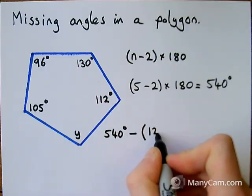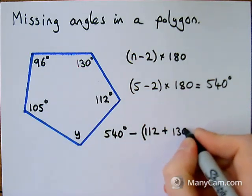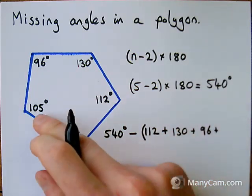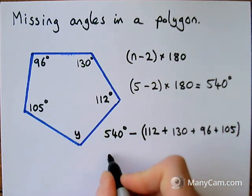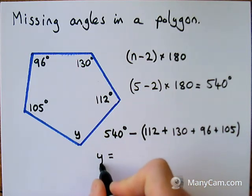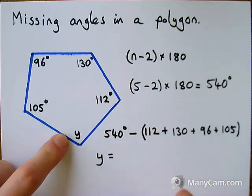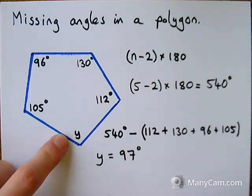So I'm going to take away 112, and I'm going to take away 130, and then 96, and then 105. And then when I work that out, that's going to tell me what my missing angle y is. Because when I put that in the calculator to work it out, I get y equals 97 degrees.